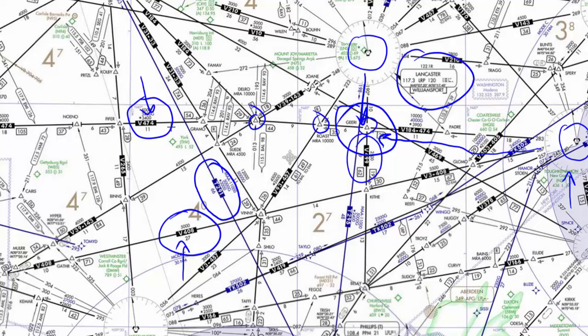This is to ensure proper traffic separation and also to keep an eye on you to ensure that you are clear of obstacles. However, obstacle clearance when flying direct does become your responsibility, and it's also your responsibility to look at the different off-route obstacle clearance altitudes to plan an appropriate altitude for your flight.